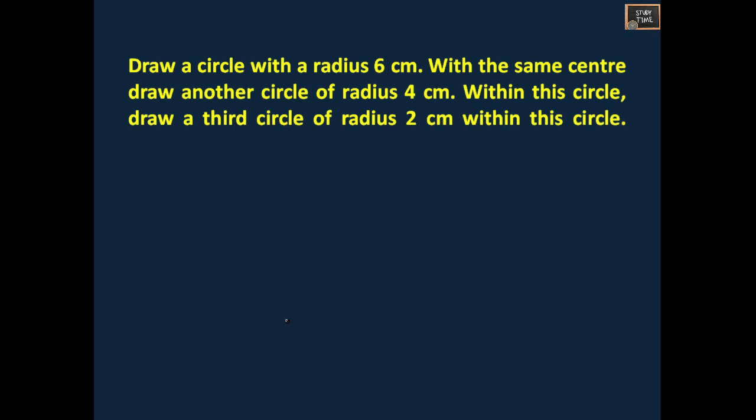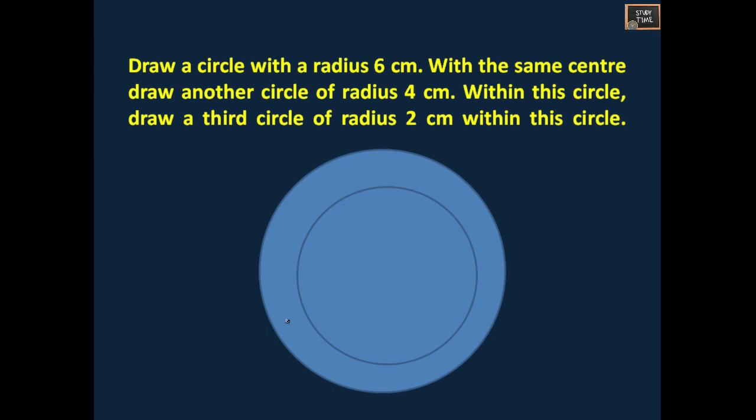Draw a circle with a radius 6 cm. With the same center, draw another circle of radius 4 cm. Within this circle, draw a third circle of radius 2 cm within the same circle. First you are going to take a ruler and mark this as center and take 6 cm. You are going to draw a circle, and again with 4 cm and with the same center, you are going to draw another circle. And again with 2 cm, you are going to draw another circle. This is how you should draw different radius within the same circle.